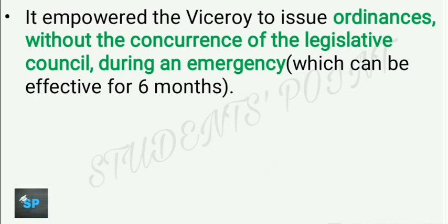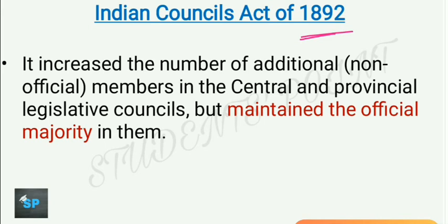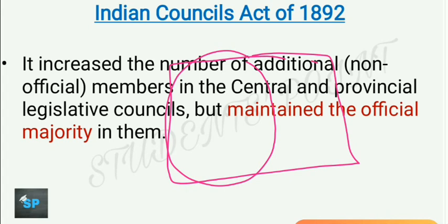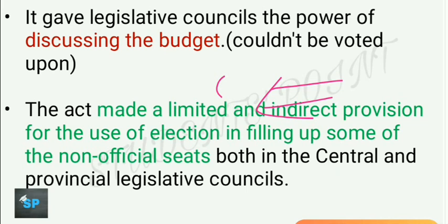Now came the Indian Councils Act of 1892. It increased the number of additional non-official members in the central as well as provincial legislative councils. However, it still maintained the official majority in them — officials remained the majority while non-official members were in minority, so they had little voice in passage of strong decisions.